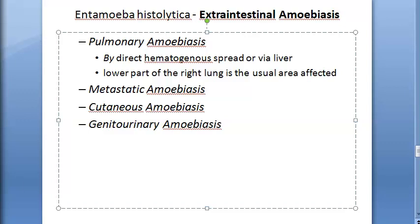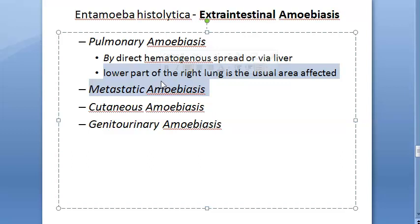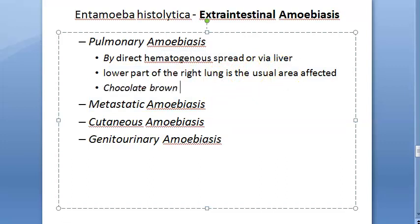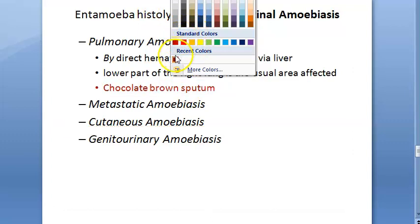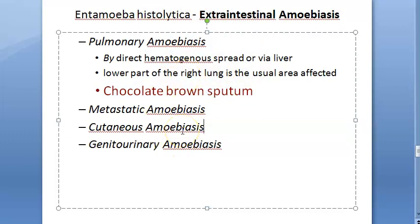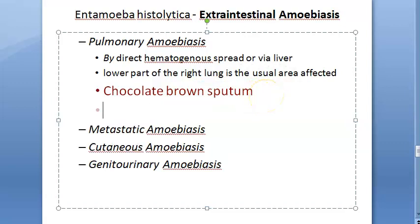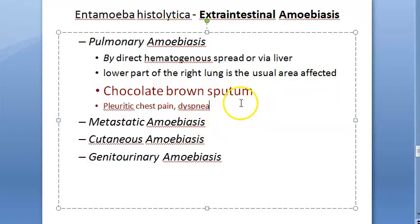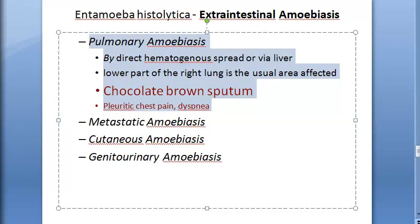In pulmonary amoebiasis, a hepato-bronchial fistula can result, with expectoration of chocolate brown sputum. The patient presents with severe pleuritic chest pain, dyspnea, and non-productive cough. There is mention of chocolate brown sputum alongside non-productive cough. That covers the lungs being affected because of amoeba.